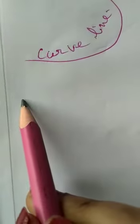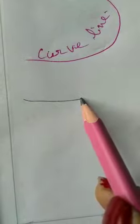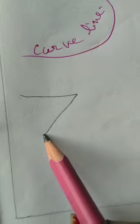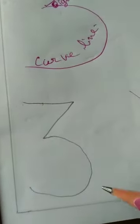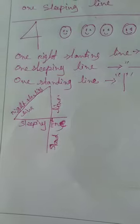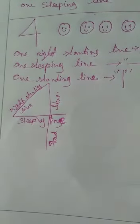Once again a slipping line. From the end a right slanting line. And from the end of this line a curved line. It makes the number 3. This is slipping line, this is right slanting line, and this is curved line. Now the number 4.